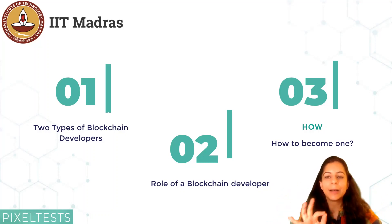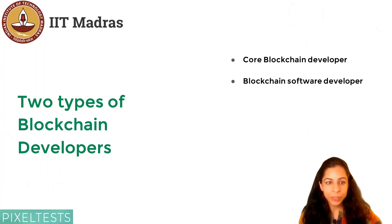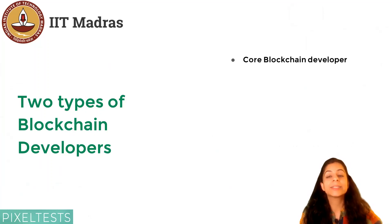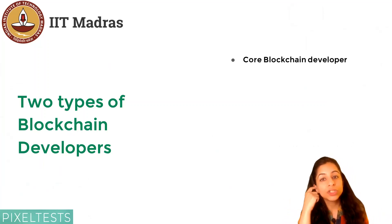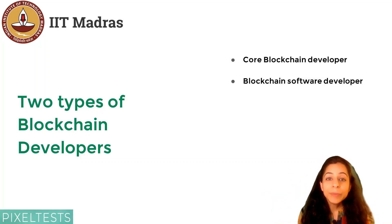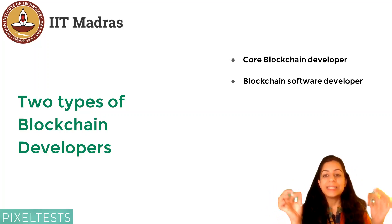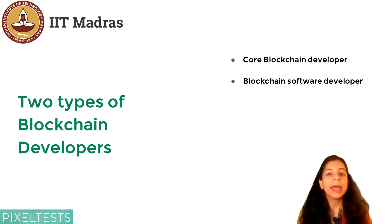To best answer this question, we first need to establish that there are two different types of blockchain developers. There's the core blockchain developer, and then you have the blockchain software developer. A core blockchain developer designs the security and the architecture of the proposed blockchain system — in essence, creating the foundation upon which others will build. Those others would be the blockchain software developers, who use the core web architecture to create apps, specifically decentralized apps called dApps.